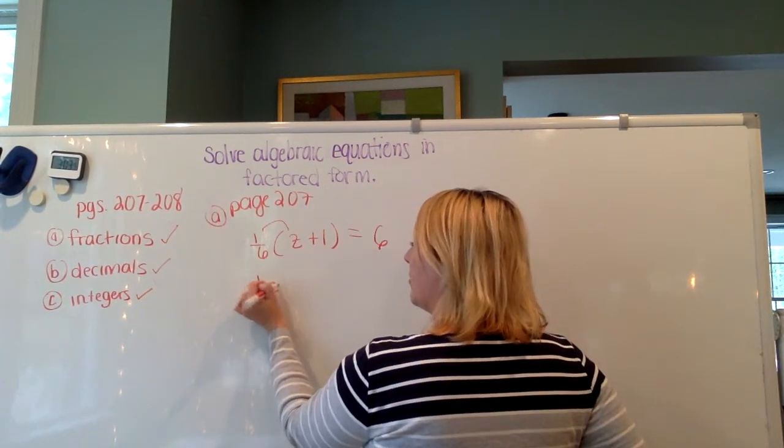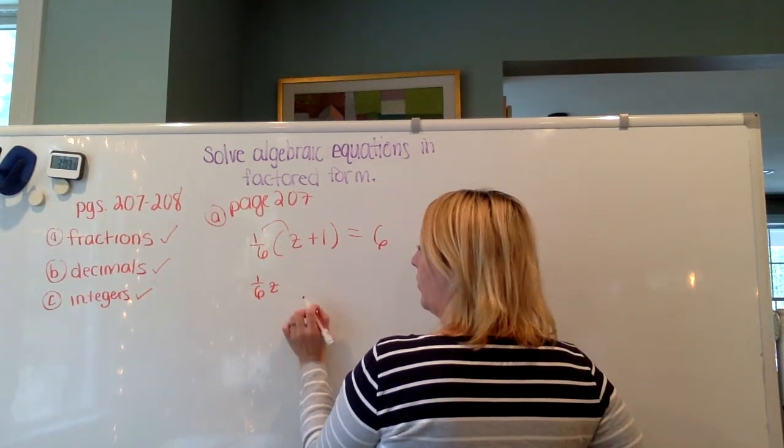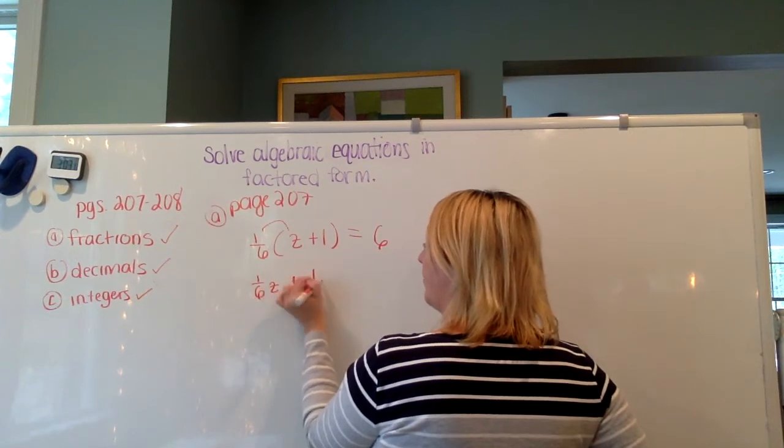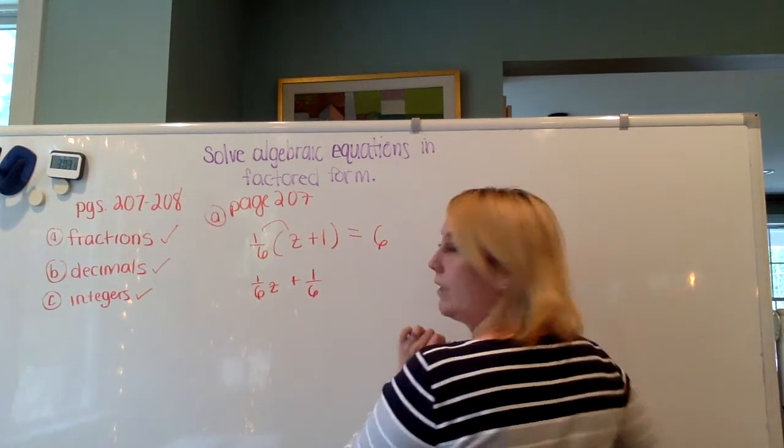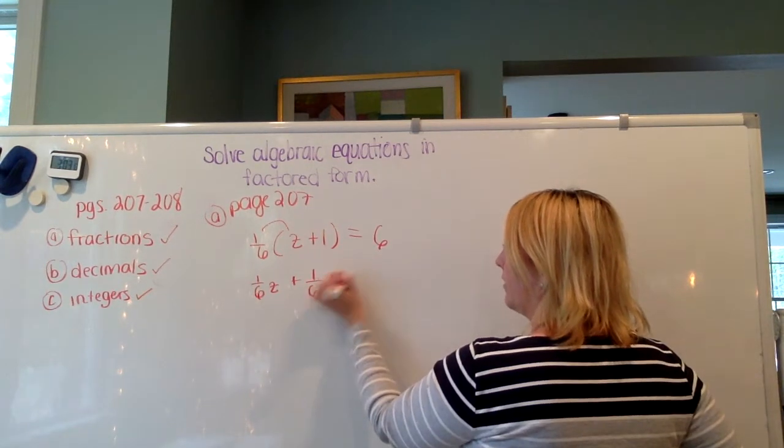So one-sixth times z, they're both positive. Positive times positive is a positive. So we got one-sixth z plus one-sixth times 1, and they're both positive, equals plus one-sixth, positive one-sixth equals 6.